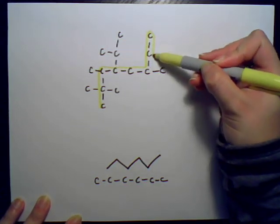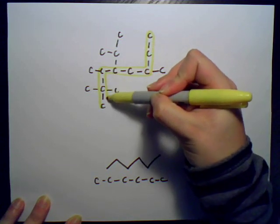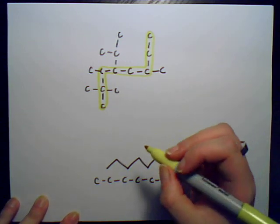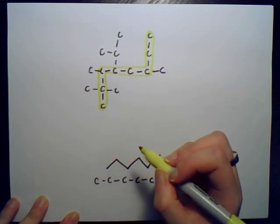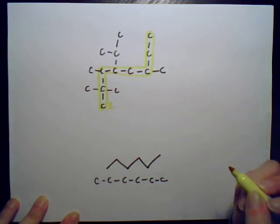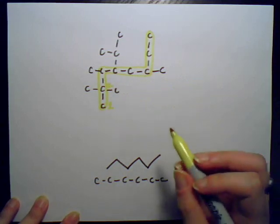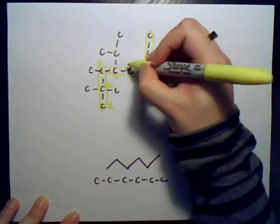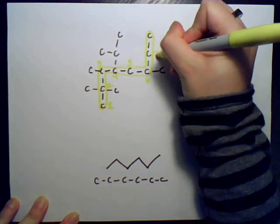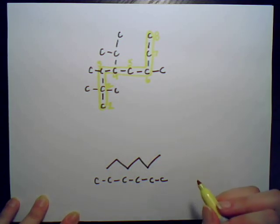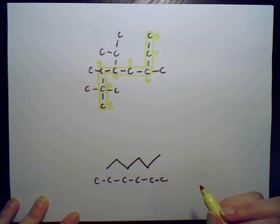I'm going to go ahead and circle those so we remember which chain we're using. Then I'll use the same color to number the carbons: one, two, three, four, five, six, seven, eight. So the first step is to find the longest carbon chain — done. The second step is to number the carbons — also done.